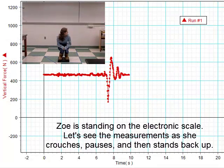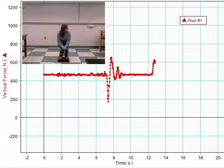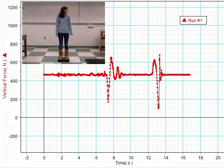Notice that when Zoe crouches, the normal force decreases and then increases. And when she stands up again, it increases, then decreases, and finally levels off as she is standing still.